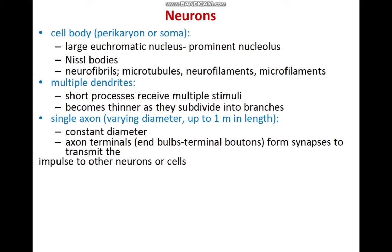Neurons can be classified in several ways: there is a morphological classification, a functional classification, and a classification according to axon length. Functionally, there are sensory neurons and motor neurons.